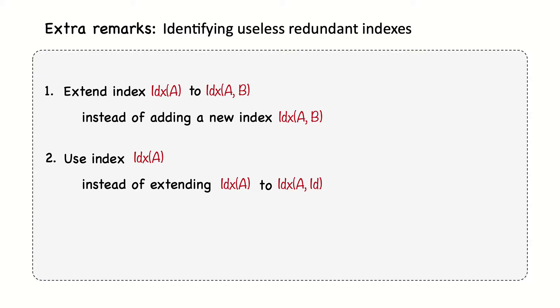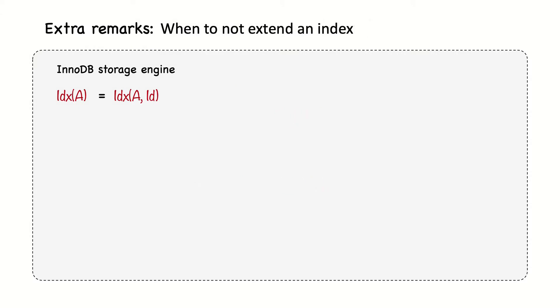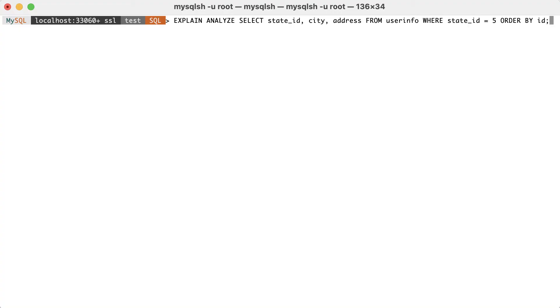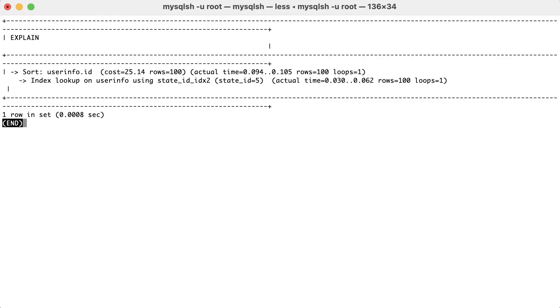This applies for InnoDB storage engine, which is the default one and the most used. Still, we should be careful when determining which indexes are candidates for dropping or extending. Recall that in InnoDB, an index on column A is really equivalent to an index on A and id, because the primary key is appended to a secondary index leaf node. If you have a query, such as where A is equal to 5, order by id, the index will be really helpful for this query. But, if you extend the index to A, B, then it really becomes A, B and id, and in this case, the query will begin to use a file sort for the order by portion of the query.